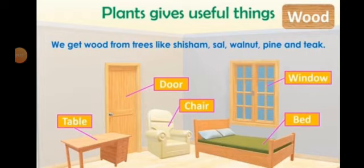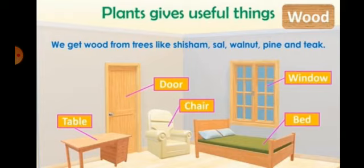Apart from food, we get wood also from the plants. The furniture in our homes — table, chair, window, door — all these things are made up of wood. Only strong trees are used for wood, because weak wood would not hold weight. Trees like sal, walnut, pine, and teak are used for furniture for our house.